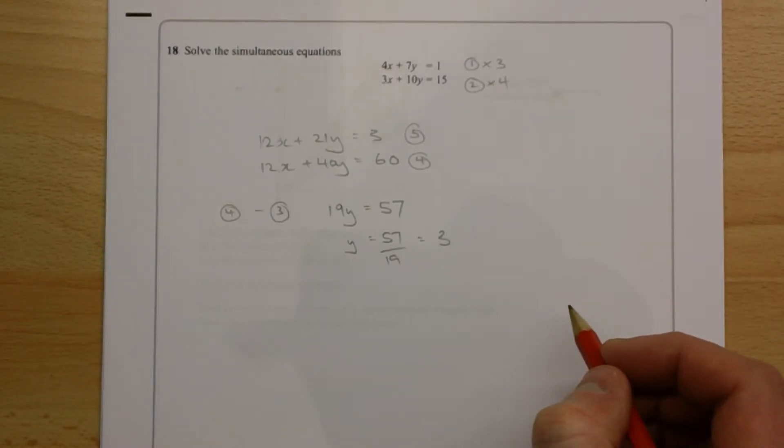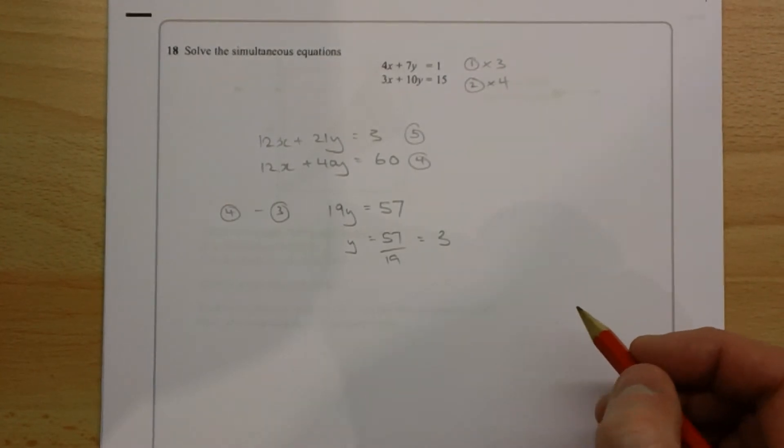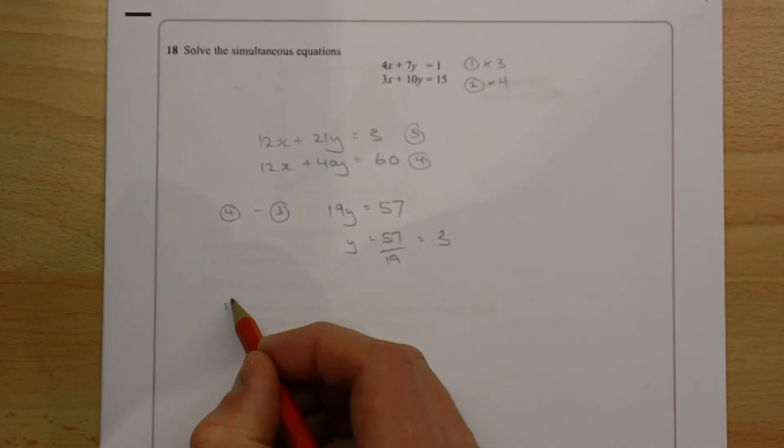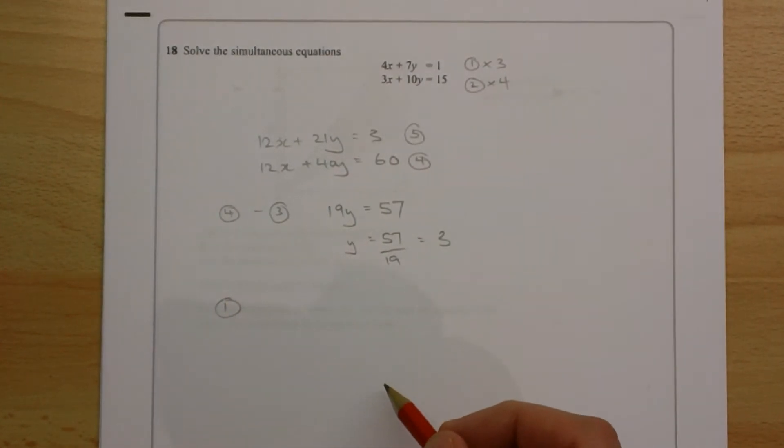Now we know what y is equal to, we can easily find out what x is equal to. We can use any of these equations to do that. I'm going to pick the first equation, because I think it's going to make the numbers smaller.